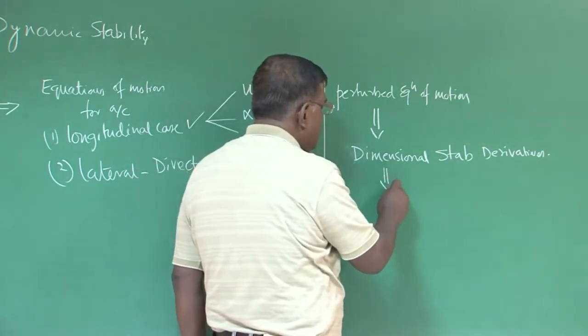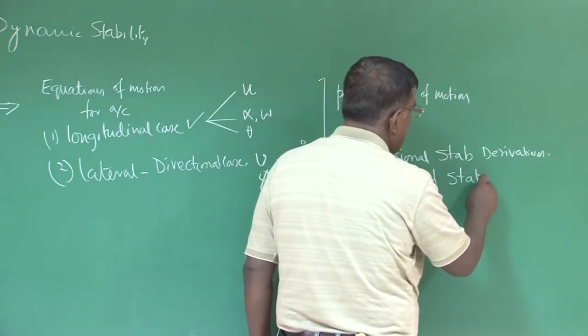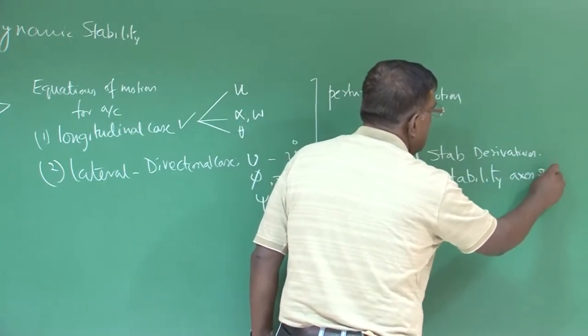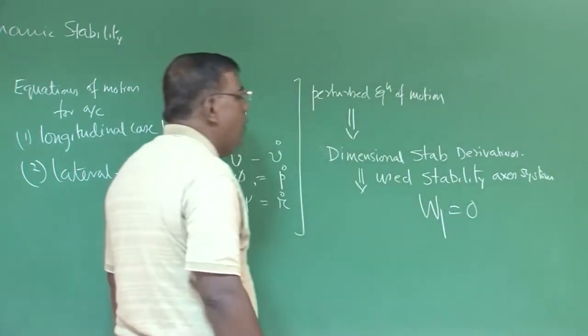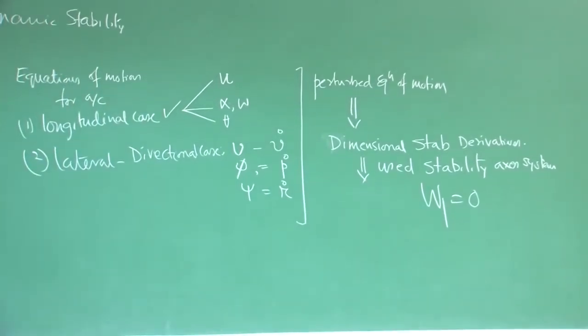Then we also used stability axis system. And we know that once I use stability axis system, the value of w, the component along z at steady state is zero, that simplifies our equation. It also helps because lift and drag are perpendicular to each other. That helps in modeling if you choose stability axis system.